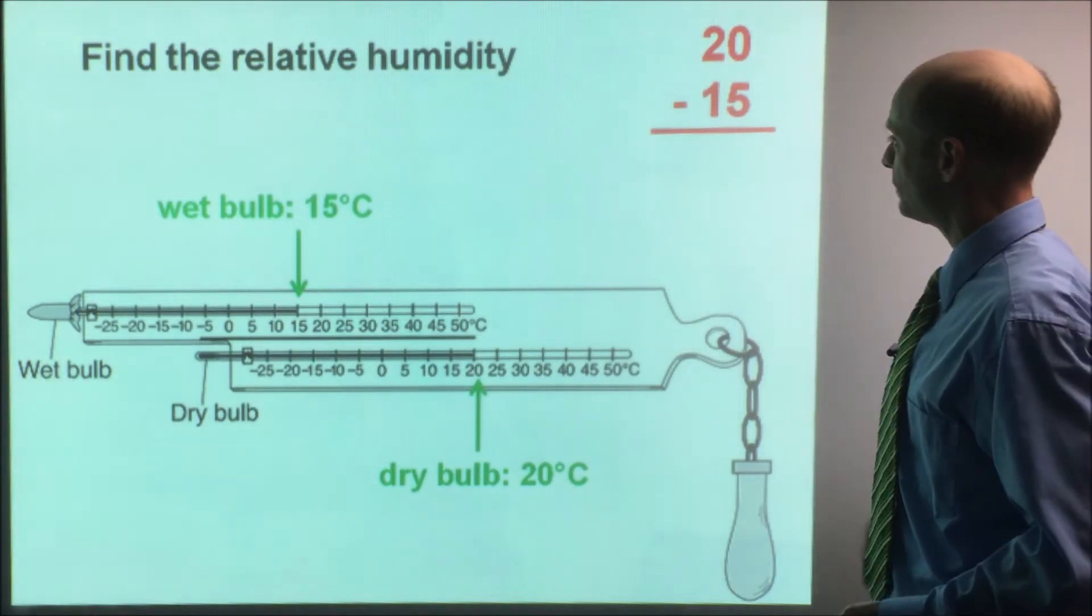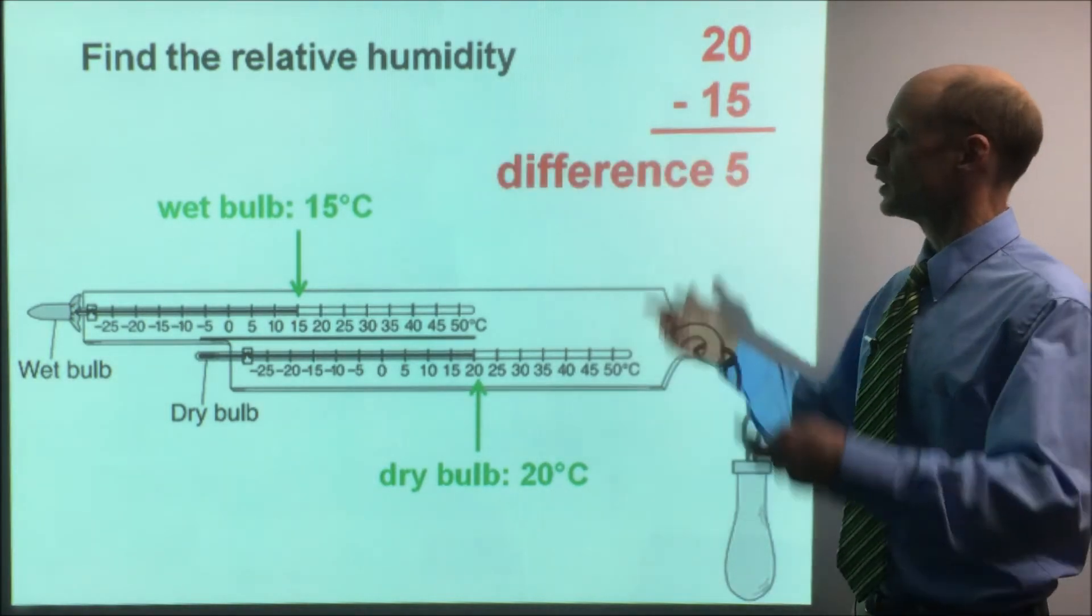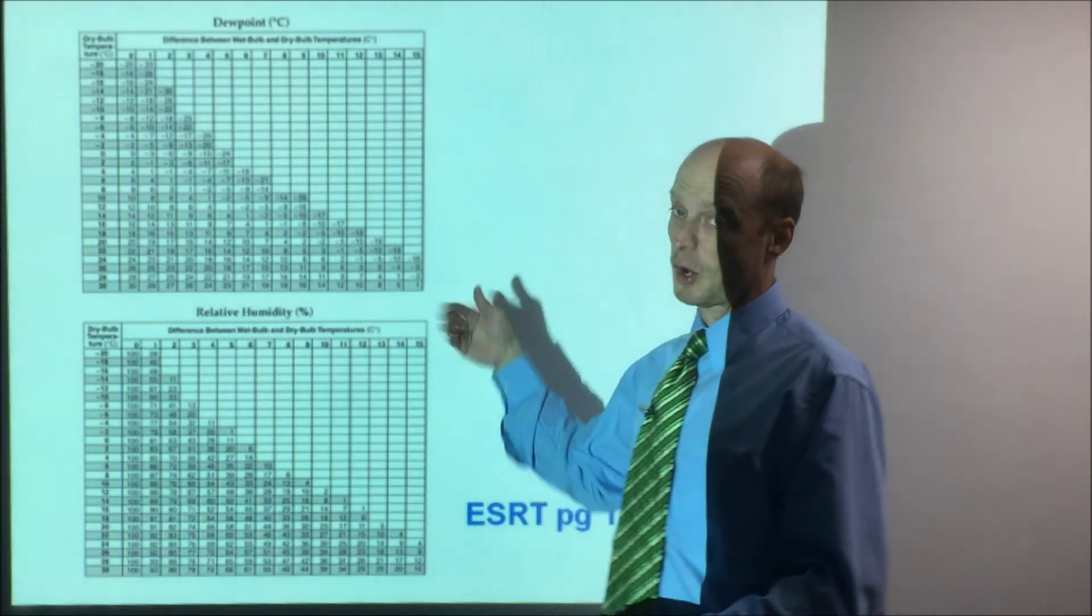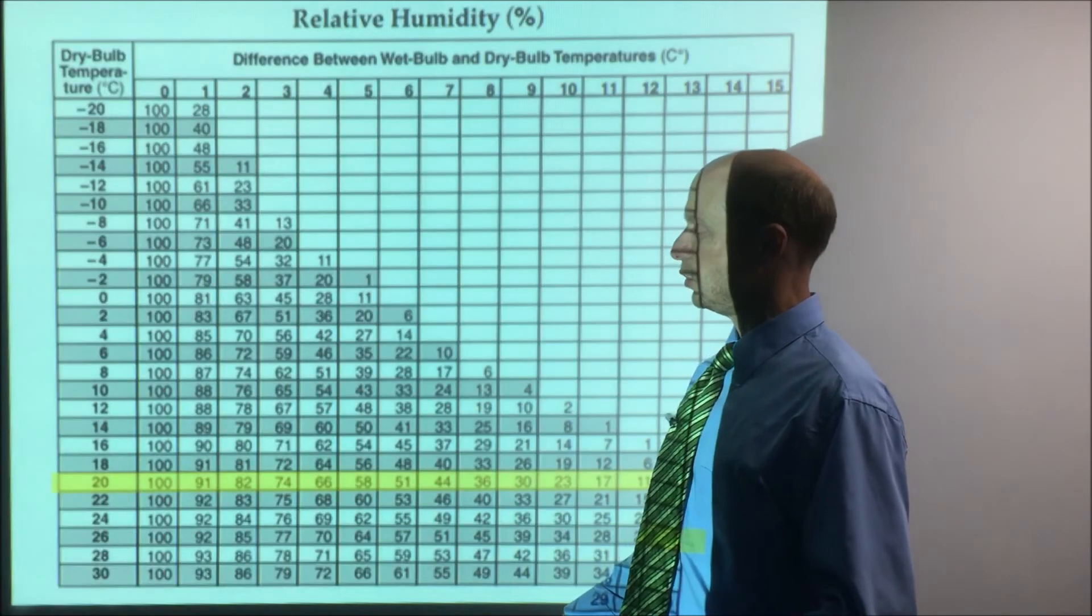So you want to find the difference here, 20 minus 15. The difference is five. So now you want to go to your chart and again, back to this page. Relative humidity is at the bottom.